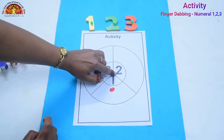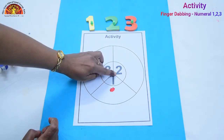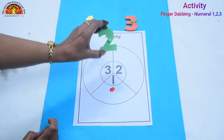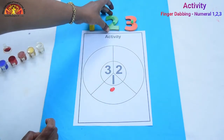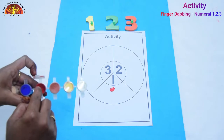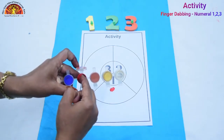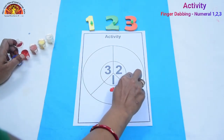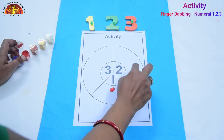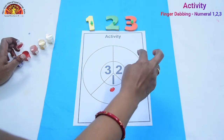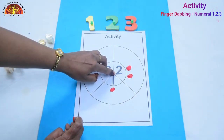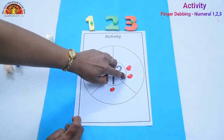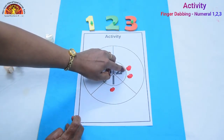Which numeral is this, kids? Yes, this is numeral 2. So we will dip our finger again and dab it here two times because this is numeral 2. So we will dab our finger here two times: 1, 2.